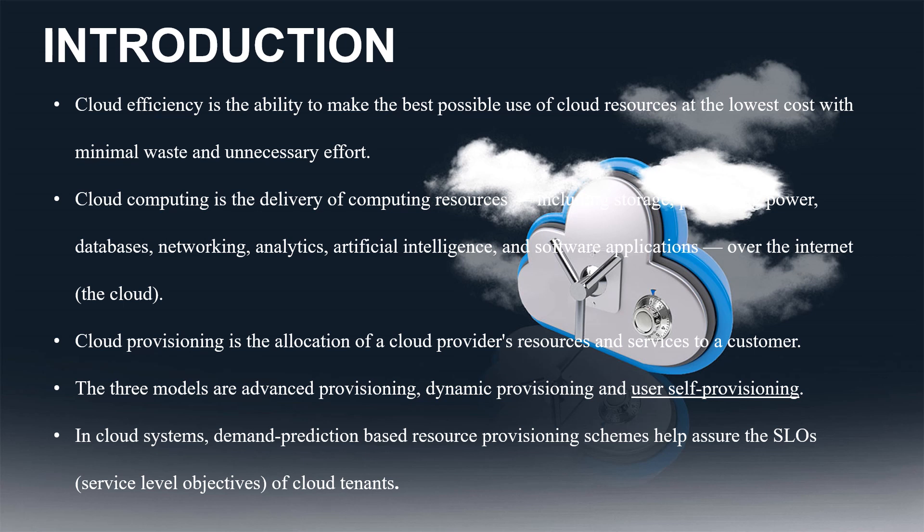Next is dynamic provisioning. The customer can purchase cloud resources based on average consumption needs. The cloud provider deploys and adjusts resources to match customers' usage demands, and it is pay-per-use billing. The last one is user self-provisioning: the customer selects cloud resources and services via a web interface, the cloud provider makes resources available shortly after purchase, and the customer pays for services with a credit card.